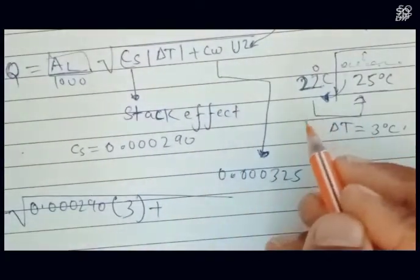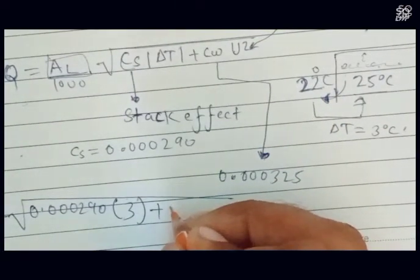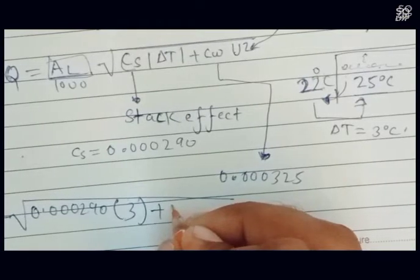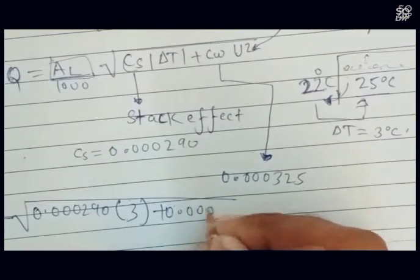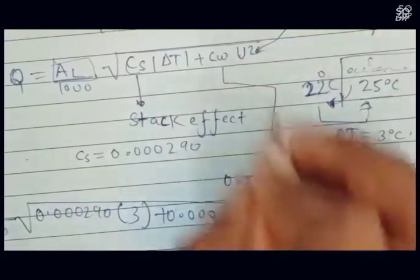For wind speed, we are multiplying the wind coefficient by wind speed: 0.000325 multiplied by 6.7 squared.